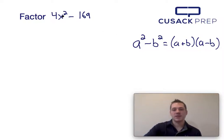So if a squared is 4x squared, taking the square root of both sides, I can see that a would just be 2x.